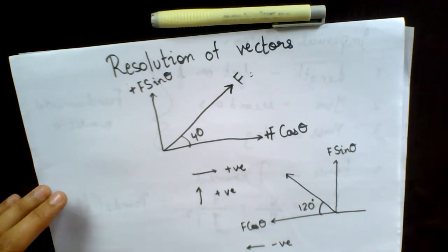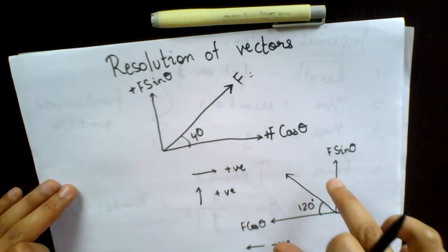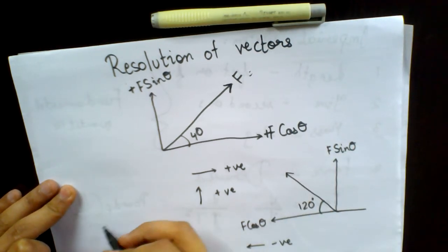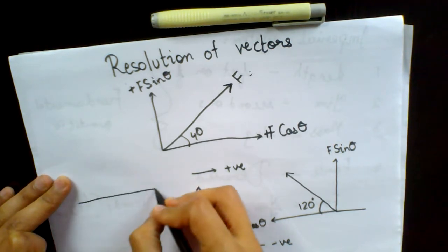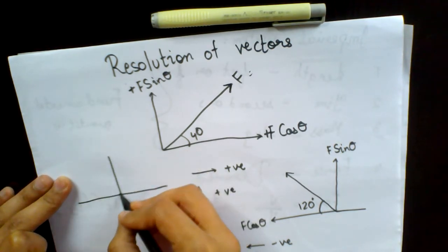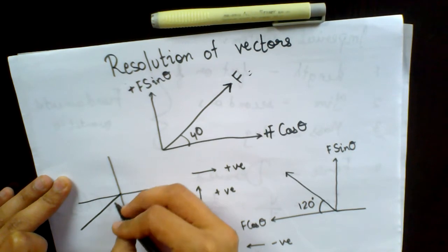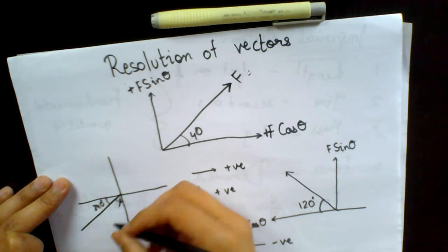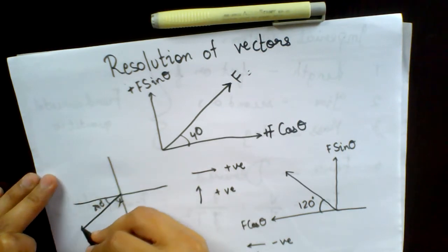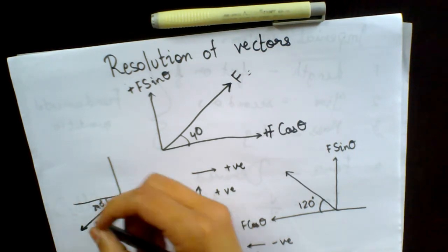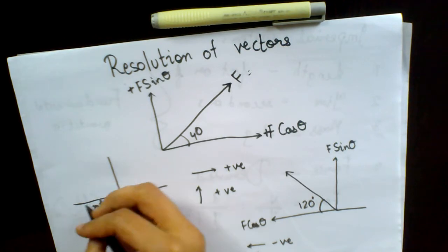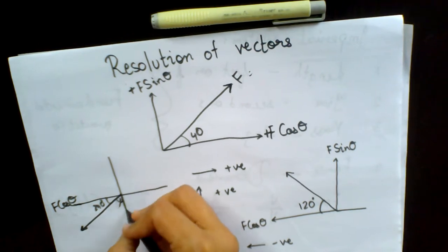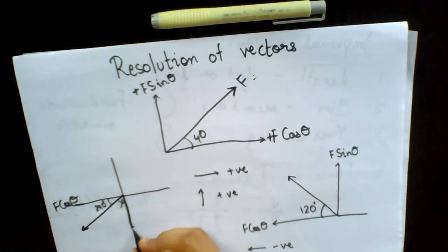Now I will be taking one more example in which both F sin theta and F cos theta will be negative. For example, if you have these four quadrants and the force is in this direction, which is at an angle of 240 degrees, and it is going in this direction. In this case also, the force is resolved into F cos theta, and in the downward direction, F sin theta.